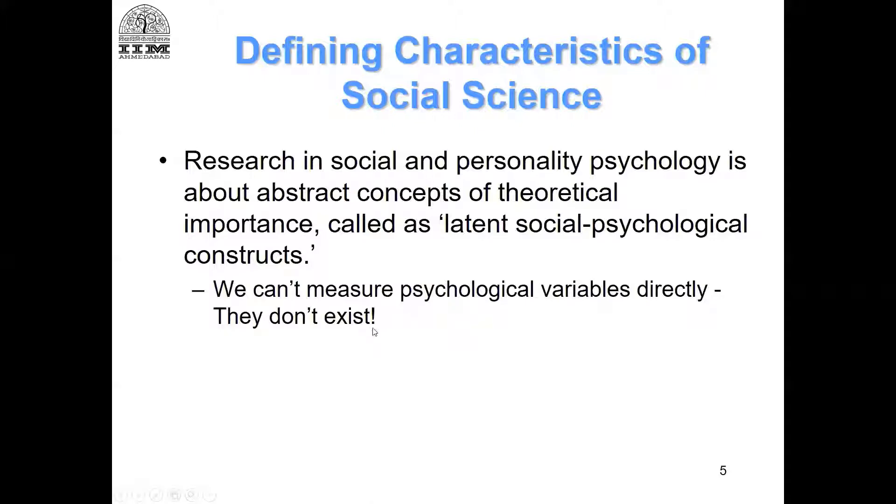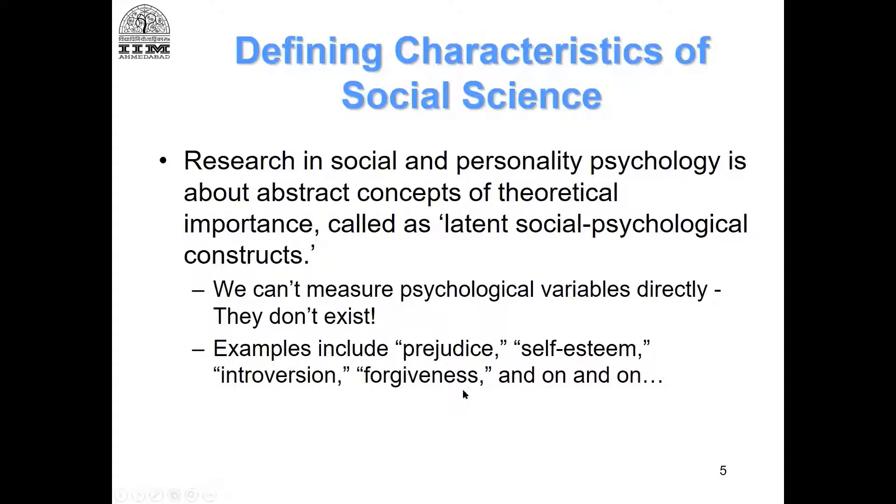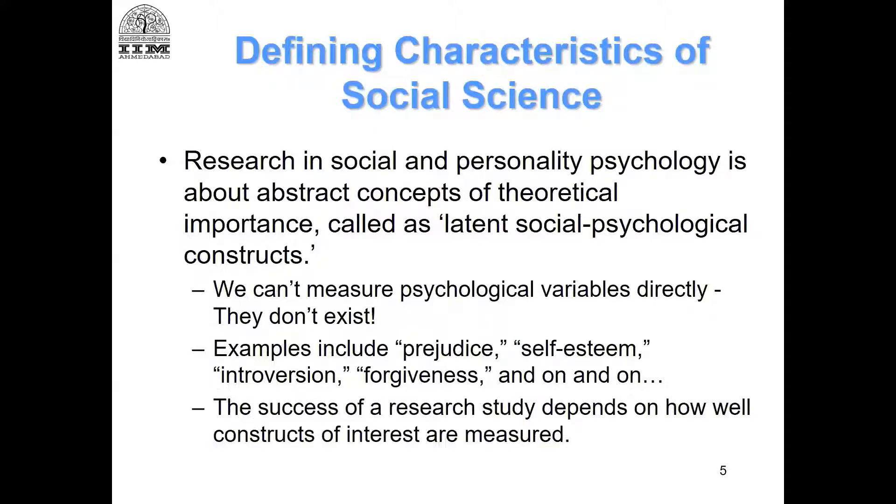As I mentioned, we have our children grow up with this idea of intelligence, but really nobody has seen intelligence and nobody knows what it is. We know the exhibited outcome of intelligence, but whether it actually exists is just our own theorization, our own concept. Prejudice, self-esteem, introversion, forgiveness - remember, these constructs don't actually exist. They are all theorizations and we are trying to capture them through the exhibited outcomes.